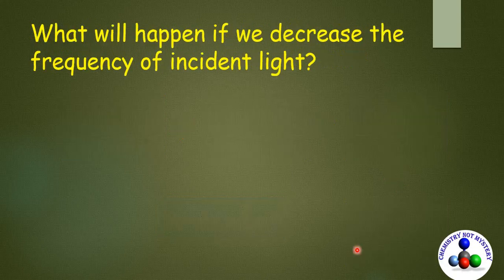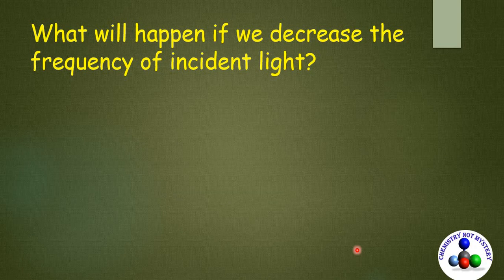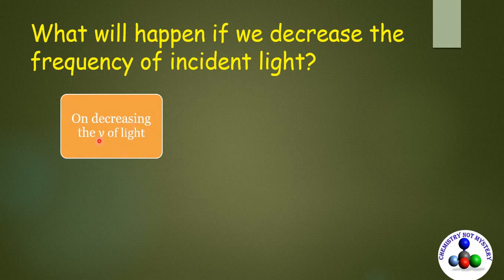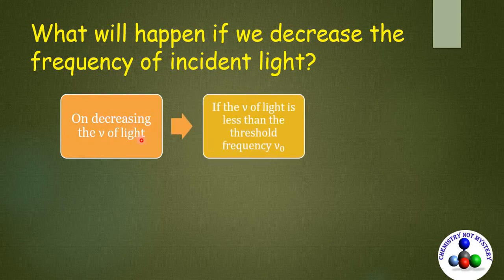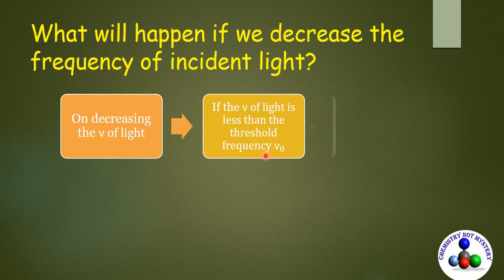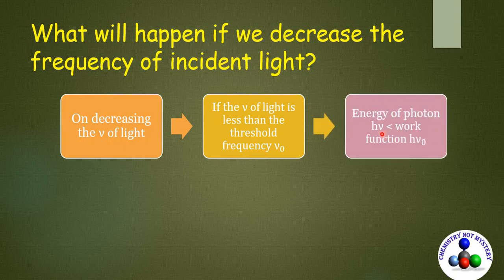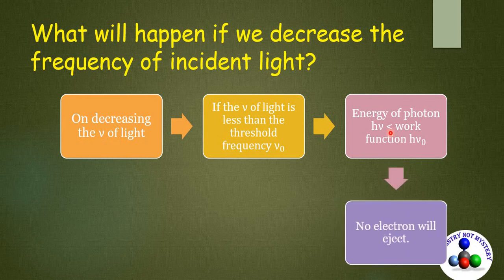What happens if we decrease the frequency of incident light? On decreasing the frequency of light, the energy of photon will decrease too. And if the photon does not have enough energy or equal energy to the work function, it won't be able to eject an electron from that metal. And no photoelectric effect will be observed in that case.